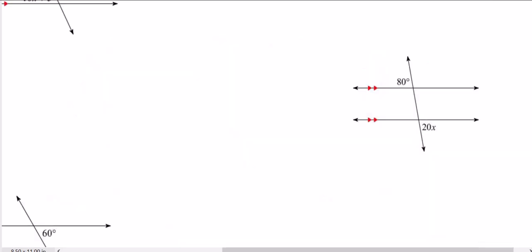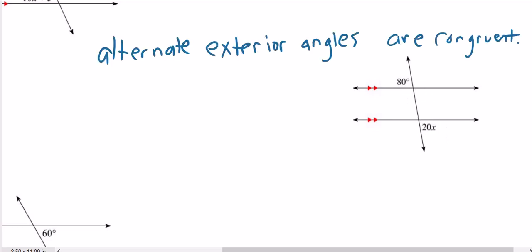For this one, we know that we are on the exterior sides. We're on the outsides of the parallel lines. So what we have here is there are different sides of the transversal.